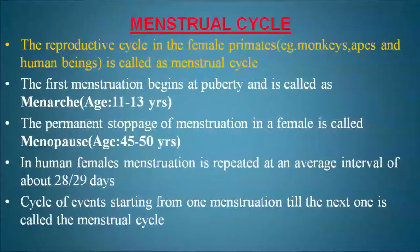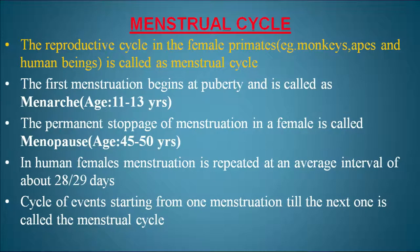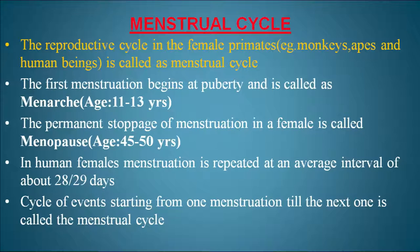The reproductive cycle in the female primates — for example, monkey, apes and human beings — is called the menstrual cycle. The first menstruation begins at puberty and is called menarche, which is seen at the age of 11 to 13 years.